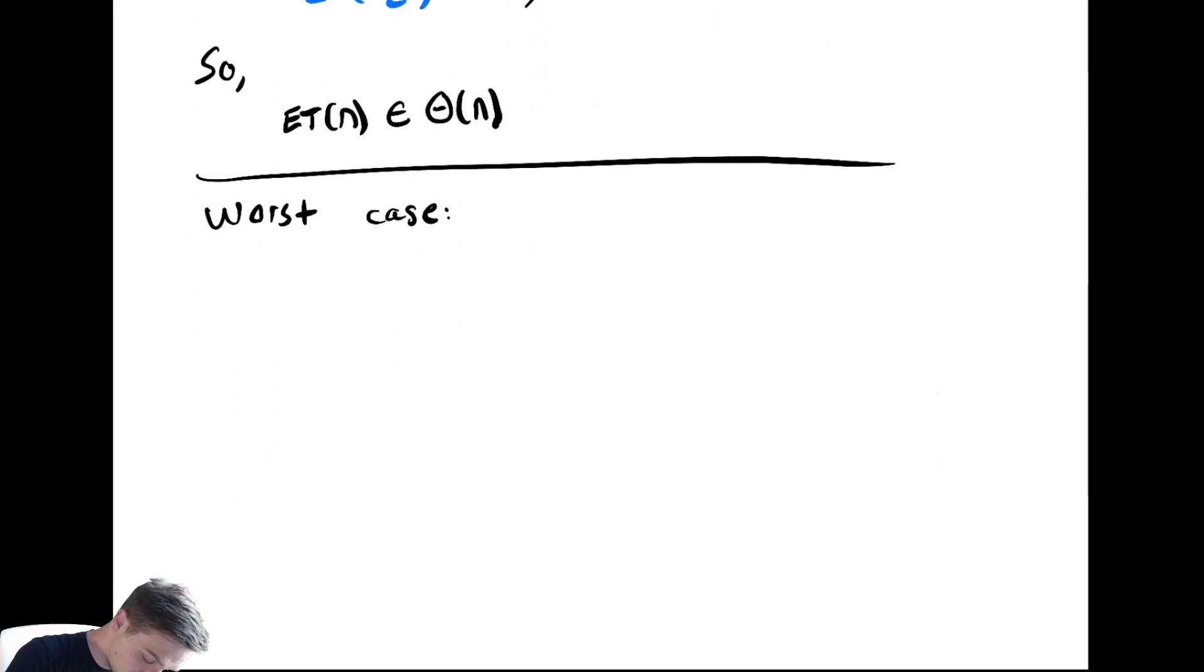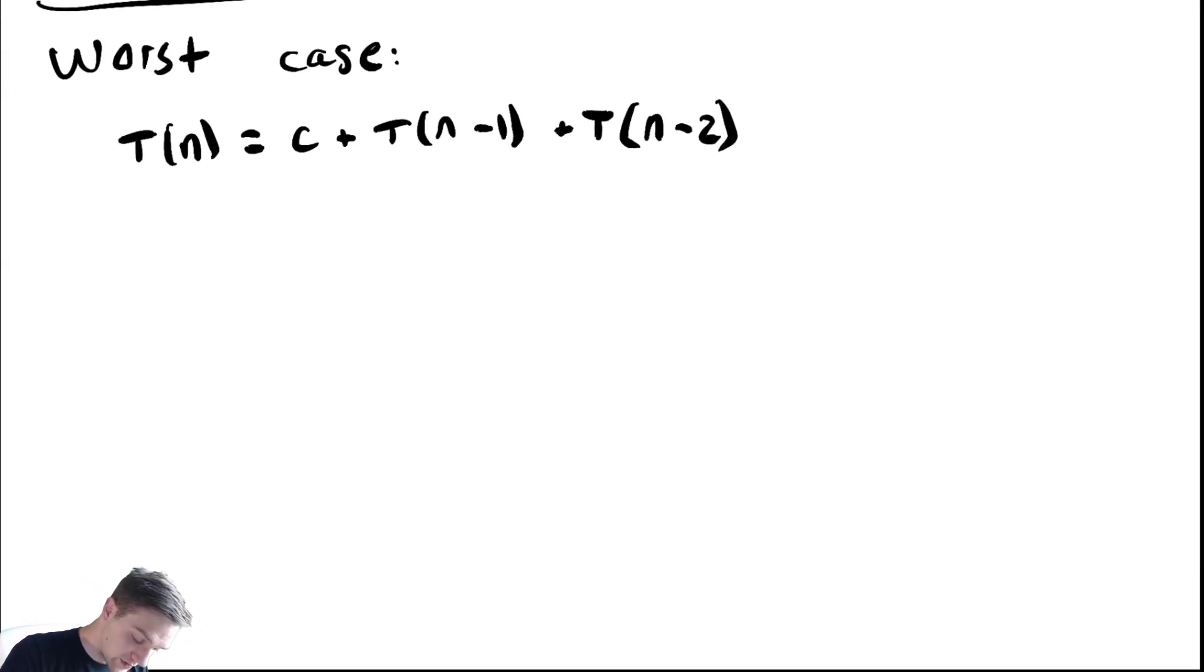Worst case: T(n) is equal to c plus T(n-1) plus T(n-2). We are going to bound this below. Why do we bound this below? This should look a lot like the Fibonacci sequence. In fact, it's the same. So we're going to go through it kind of quickly. This is greater than or equal to - I can drop all of the other terms and then replace the larger recursive call with a copy of the smaller. So replace the T(n-1) with a T(n-2) and keep the other T(n-2) around.